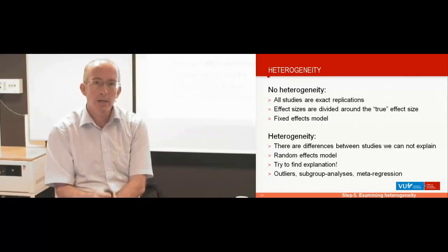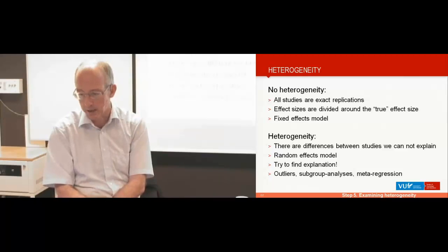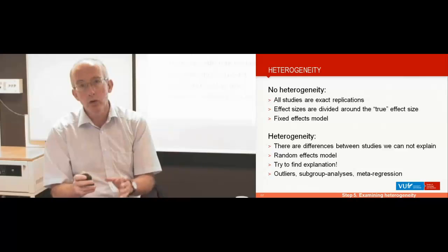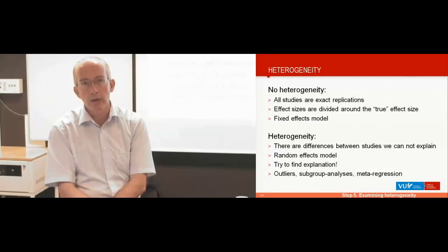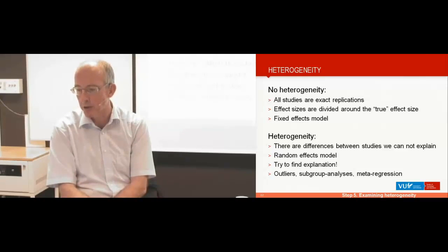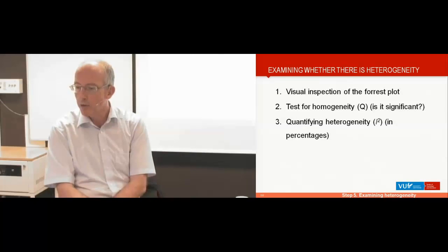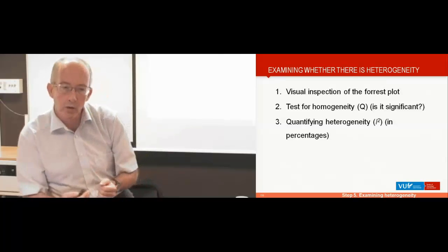In any meta-analysis, heterogeneity is a key concept. You have to examine heterogeneity, and if you find it, you have to examine possible sources of it. How do you examine heterogeneity? You can look at outliers, do subgroup analysis, moderator analysis, or meta-regression analysis. But first, how do you examine whether there's heterogeneity in your data?